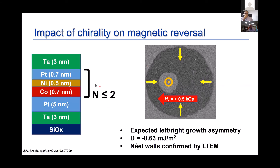We observe this for cobalt-nickel-platinum with one or two unit cells. A nucleated domain grows — with an in-plane field and pulsed out-of-plane field — more to the right than to the left. Measuring for many different in-plane fields, we extract a DMI value that is not unexpected for this material system. In collaboration with Carnegie Mellon, we confirm Néel walls in the system, consistent with the DMI-expected spin structure winding around the domain.